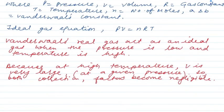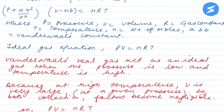Because of this, when the temperature is higher, volume is higher, the pressure will automatically decrease. And in that case, the force of attraction is negligible. So in that case, PV is equal to nRT. Both the factors a n squared by V squared and we have to neglect nb.